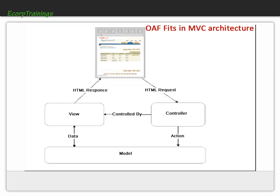When an HTML request is given from the user, the controller performs the action. The controller calls methods from the model, and the model cannot call the controller. The view can exchange data from the model according to the controller, and in the same way the model can interact with the view. From the view, the user gets an HTML response.